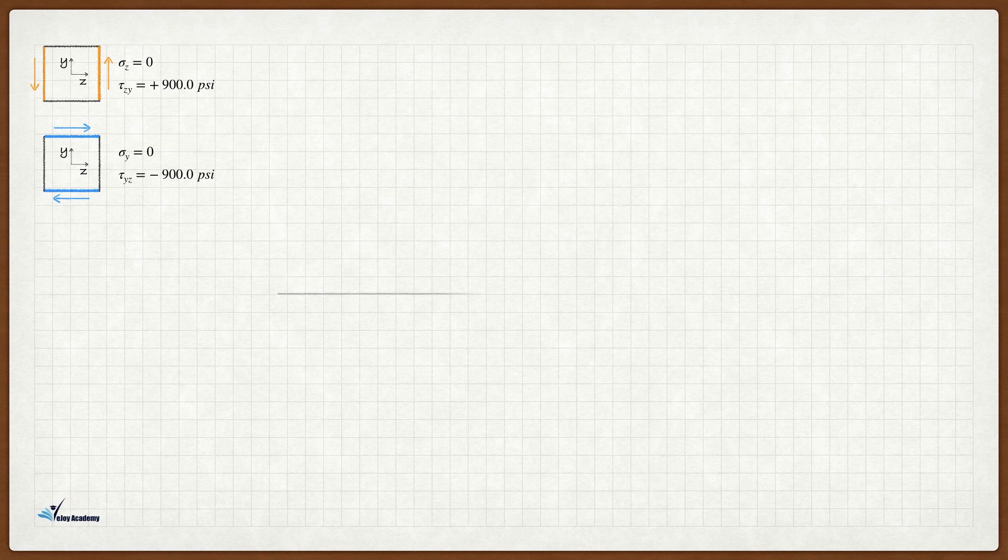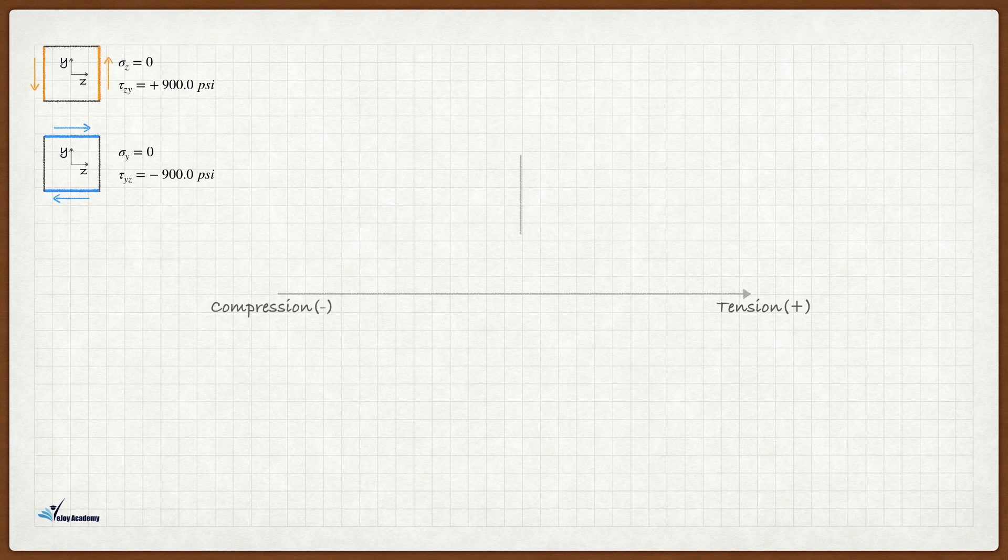Now let's transfer these points onto a 2D coordinate system. Note that the horizontal axis represents the normal stress which tension would be positive and compression would be negative. The vertical axis represents the shear stress which positive direction would be downward.